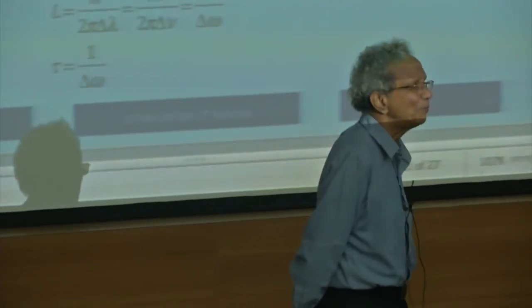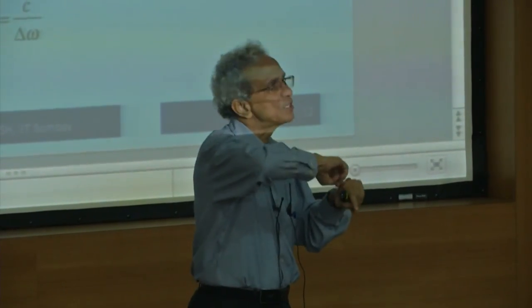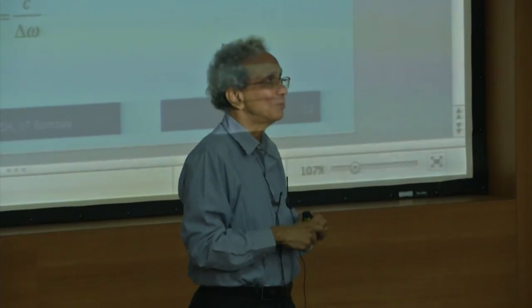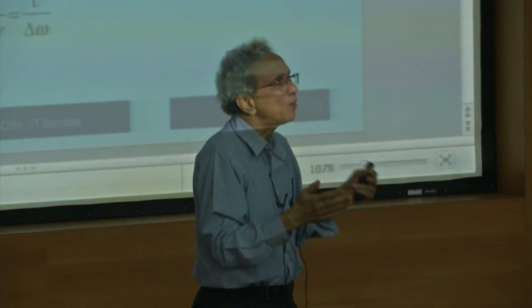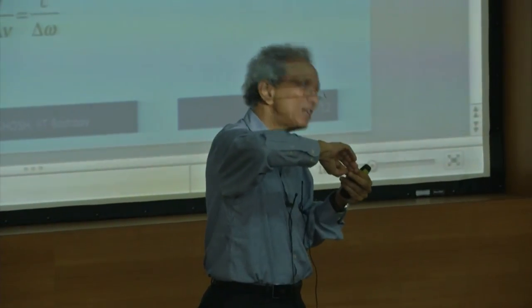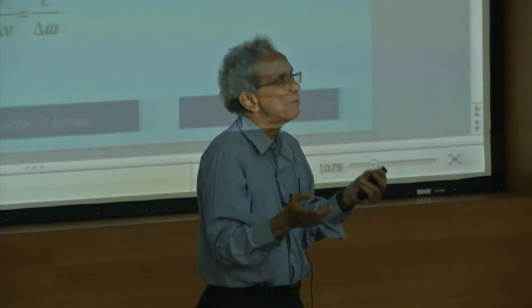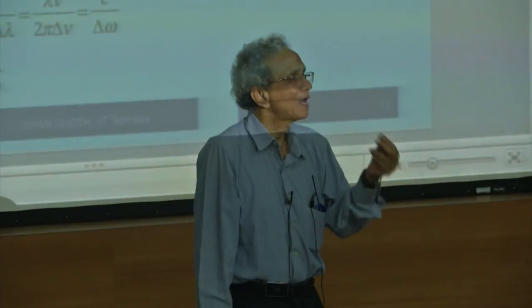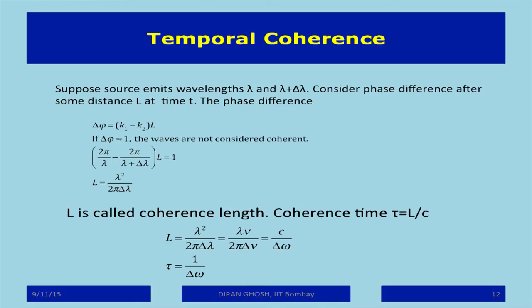Self coherence refers to the phase correlation of the same wave with itself at a time delay τ. Even a single wave can lose its phase relationship along the way, depending on the type of wave. If a time-independent phase correlation exists between different parts of the same wave, that is spatial self-coherence; in a thermal source, even that correlation is lost beyond a certain distance or time.